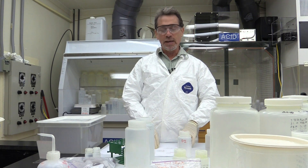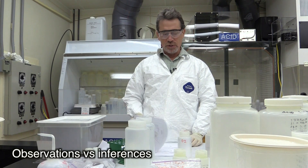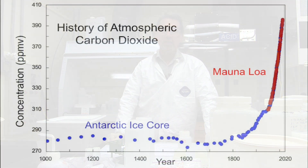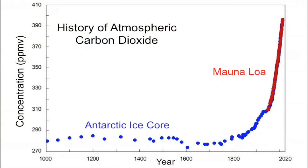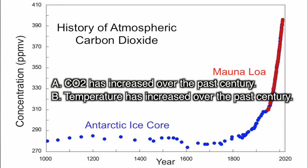We're going to first ask the question: what is science? The key to understanding science and the scientific method is being able to understand the difference between observations and inferences. A really good example is the iconic diagram of rising CO2 levels in the Earth's atmosphere over the past thousand years. An observation may be that the concentration of carbon dioxide in the atmosphere has increased over the past century, as seen from data from 1900 to 2000. Another observation is that the temperature of the Earth's atmosphere has increased over the past century, based on recorded observations from instruments such as thermometers.